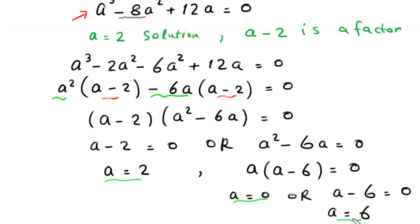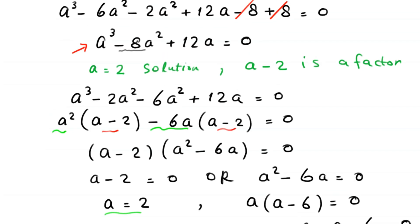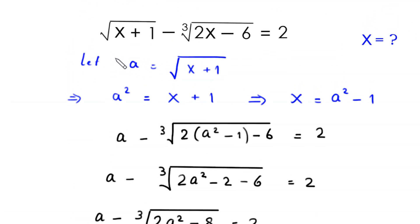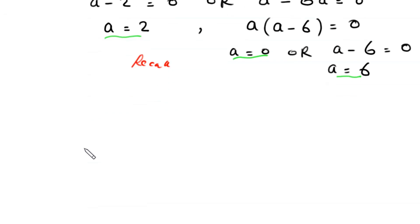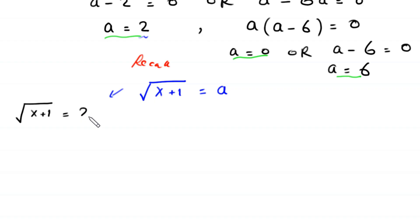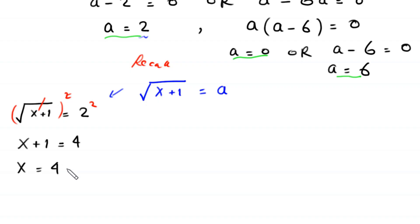To find the values of x, recall that we supposed a equals the square root of (x+1). When a is 2, square root of (x+1) equals 2. Squaring both sides: x plus 1 equals 4. Moving 1 to the right hand side: x equals 3. This is the first solution.